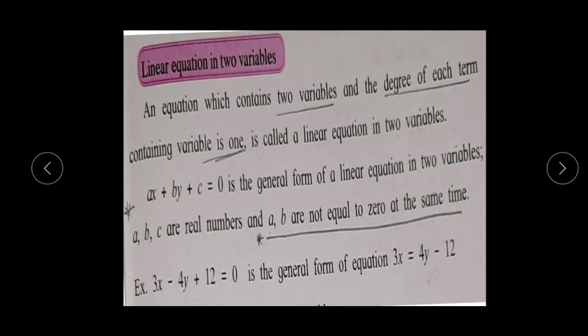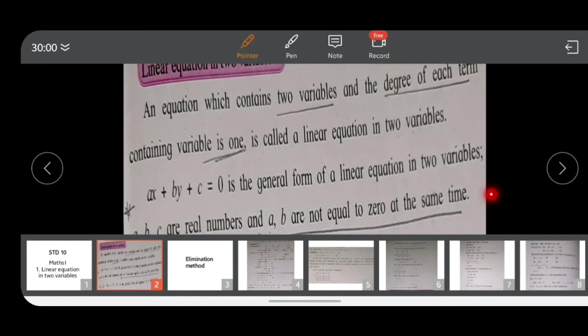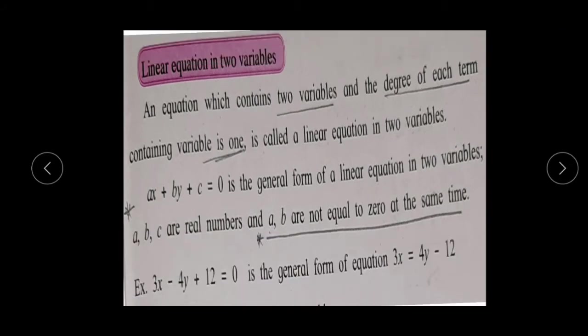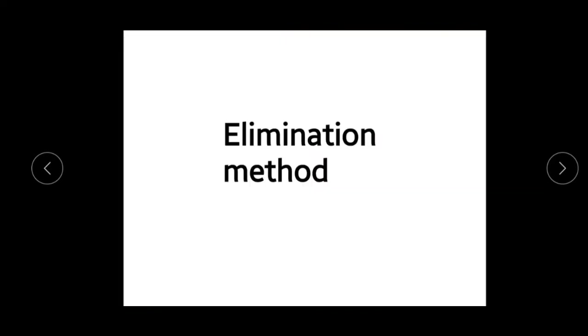Consider the equation 3x = 4y - 12. This equation contains 2 variables x and y, and the degree of each x and y is 1. Its general form is 3x - 4y + 12 = 0. When 2 or more equations are considered at the same time, it is called simultaneous linear equations in 2 variables.